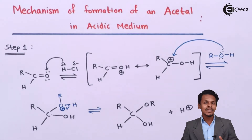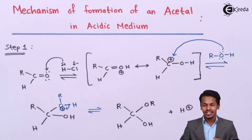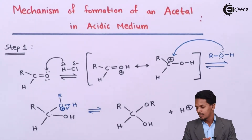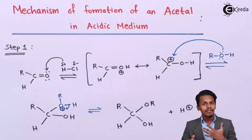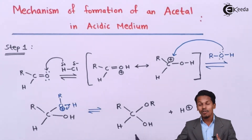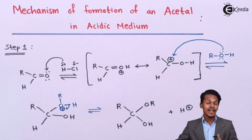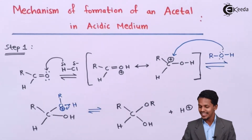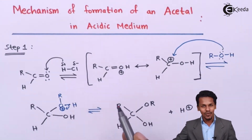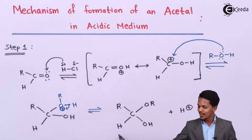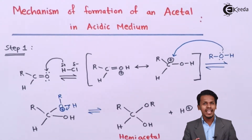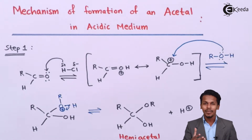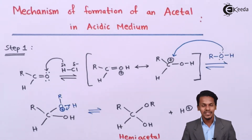This reaction is the acid-catalyzed step one. The product formed in step one is not an acetal — it is in fact a half acetal, which is known as a hemiacetal. The word 'hemi' comes from the Greek word meaning half, so it is a half acetal.